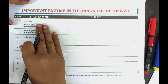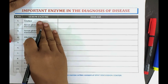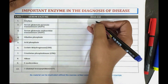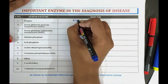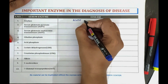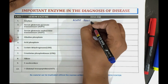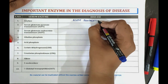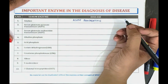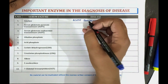The first enzyme is amylase. With the help of amylase we can detect the disease acute pancreatitis. So amylase is the enzyme used for the diagnosis of acute pancreatitis.